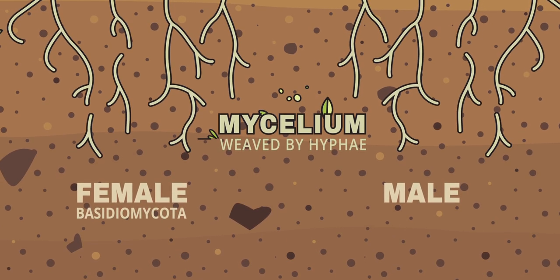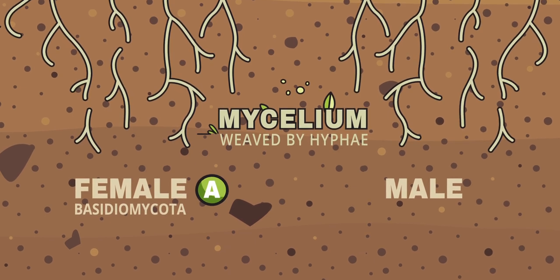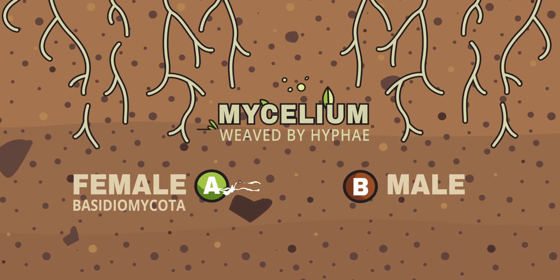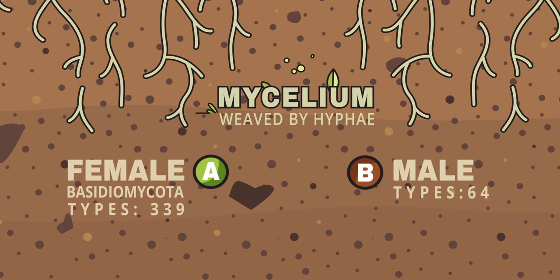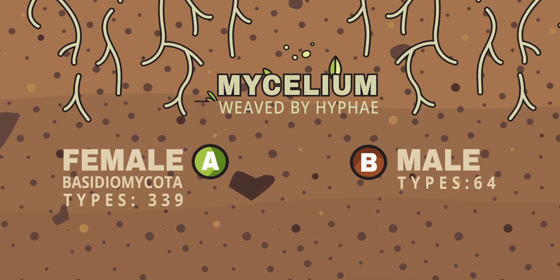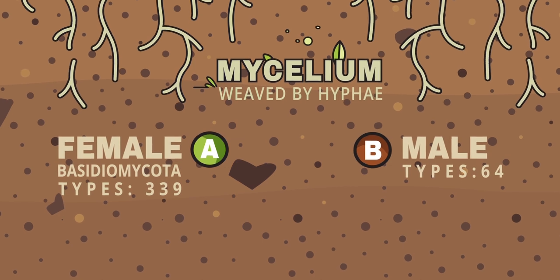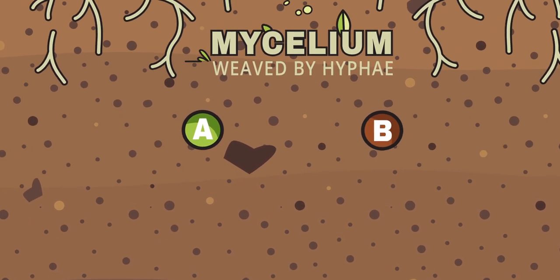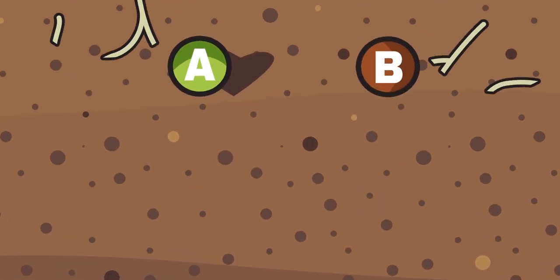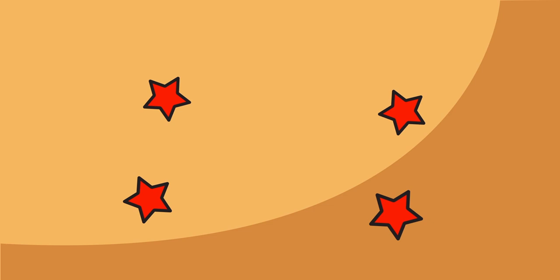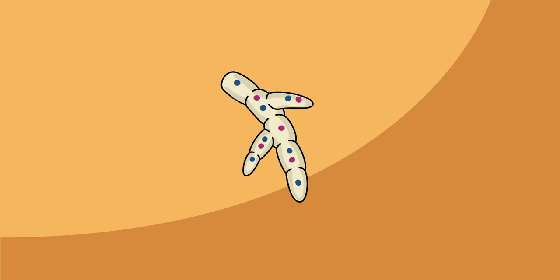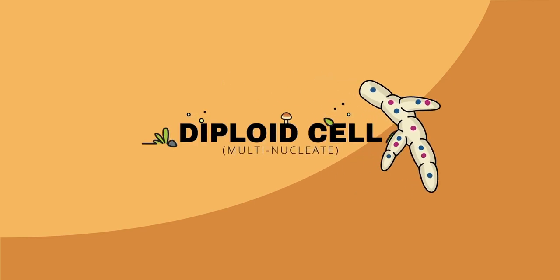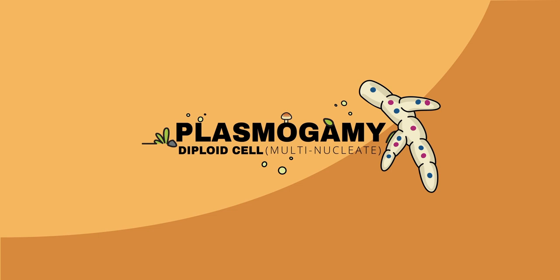Although not just two. In Basidiomycota, we often talk about mating type A and B. A and B are compatible, but there are not just one A and one B. Some mushrooms have more than 339 A mating types and more than 64 B mating types, all happily able to mate with one another. So what actually happens when a type A meets a type B? Have you ever seen Dragon Ball Z? Fusion! When a type A and a type B meet, they fuse together and transform a haploid cell with one nucleus into a diploid cell which is multinucleate and contains the superpowers of both A and B. This process is called plasmogamy.